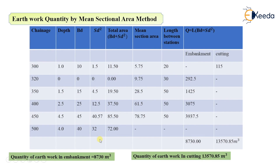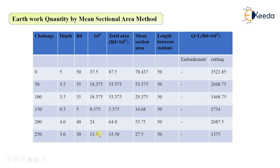For embankment sections, S = 2. So: 2×1.5² = 4.5; 2×2.5² = 12.5; 2×4.5² = 40.5 (approximately 40.57); and 2×4² = 32. We have now calculated all the S×D² values for both cutting and embankment sections.